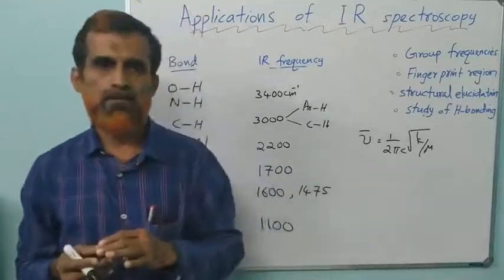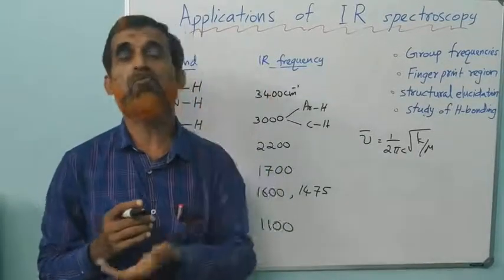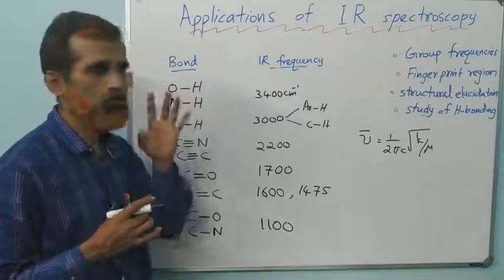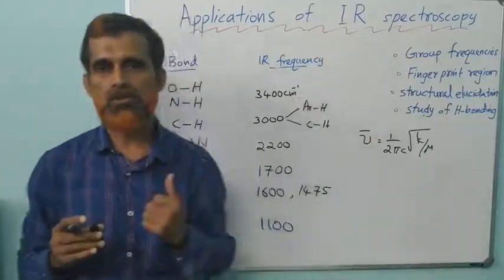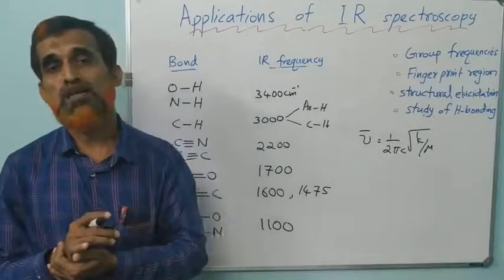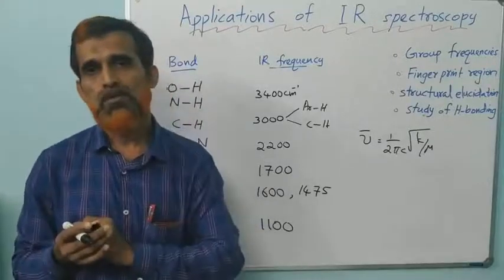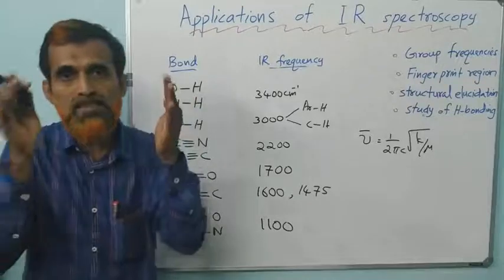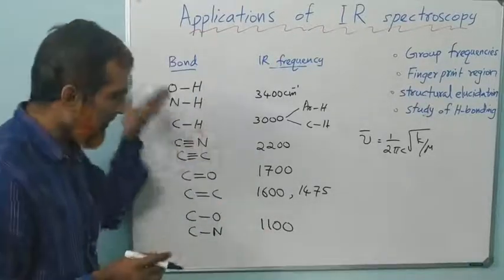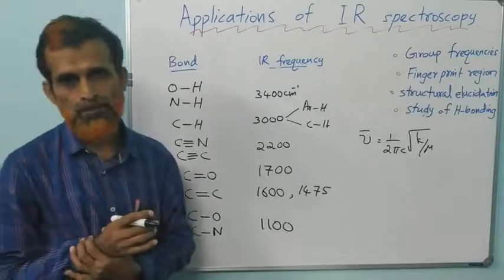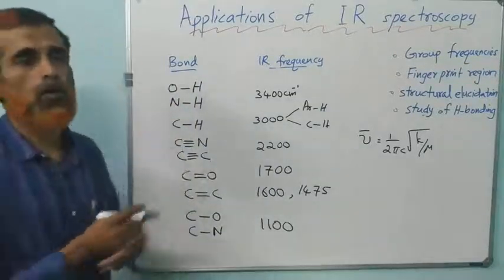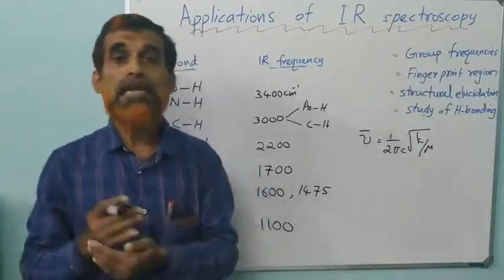Scientists studied the IR spectrum of various related molecules. For example, alcohols contain OH bond, so they took various alcohols like methanol, ethanol, isopropanol, phenol, and studied their IR spectra. They could average out the frequency value for the OH stretching frequency. So data is available for the IR frequency of various functional groups or bonds. This is the concept of group frequency, the IR frequency of a particular functional group or structural unit which is independent of the rest of the molecule.